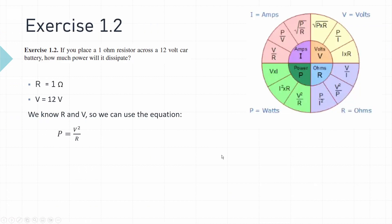The third exercise in this chapter, which is exercise 1.2, asks you to calculate the power dissipation of a one ohm resistor if it's connected across a 12 volt car battery. We can see the two numbers that we've been given are the resistance and the voltage. So resistance is one ohm and voltage is equal to 12 volts.